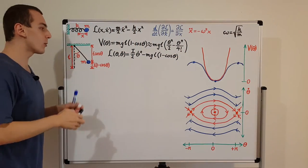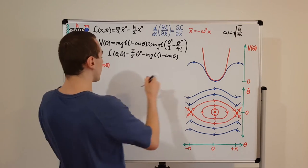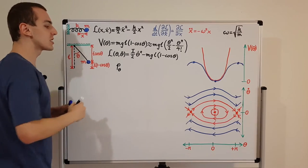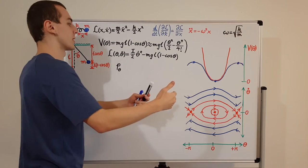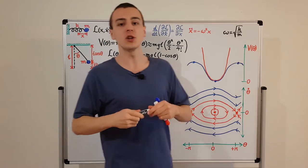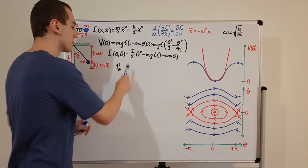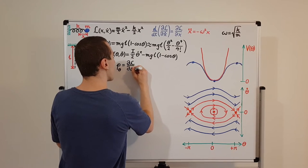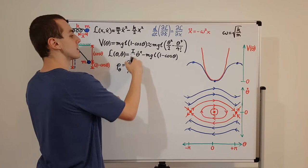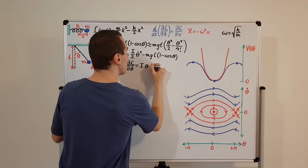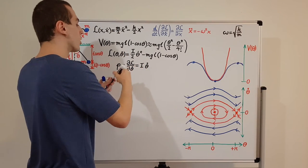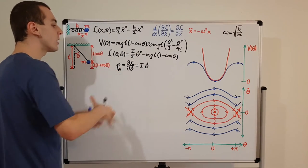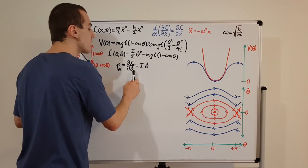From the Lagrangian I want to find the canonically conjugate variable. I'll write it as p sub theta — it won't be linear momentum like mẋ from before, but rather the canonically conjugate coordinate corresponding to angular momentum. It is given by the partial derivative of the Lagrangian with respect to theta-dot. Differentiating using the power rule gives I times theta-dot, which can also be written as I omega, where omega is the angular velocity.